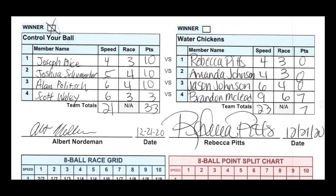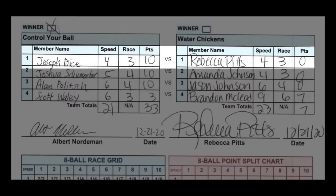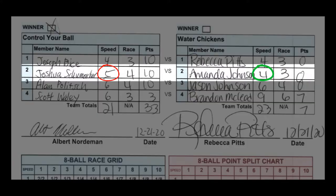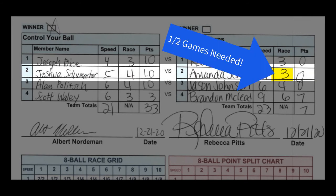However, the player with the lowest speed has an opportunity to steal points even if they lose the overall match. Take a look at the first match and notice that both players have the same speed, so there is no point split available. However, in match two, Amanda has an opportunity to steal points because she's playing with the lower speed. Her speed's a 4, Joshua's speed's a 5. The end result was that Joshua won all 10 points because in order for a point split to occur,